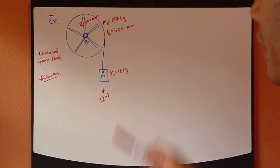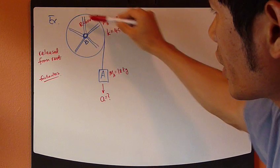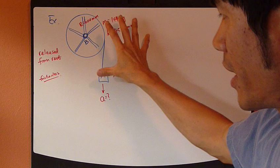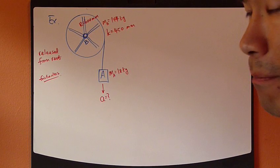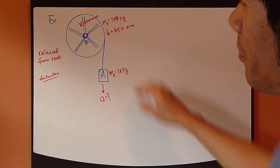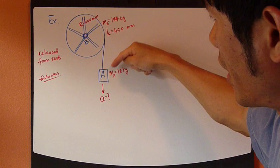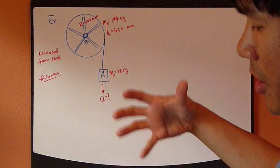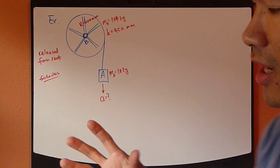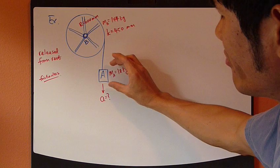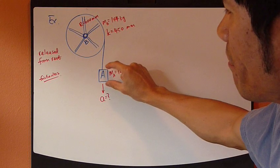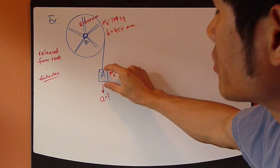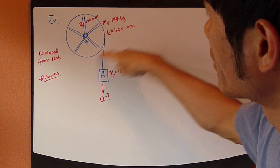Let's look at an example. This includes a wheel and some weight — this is like a hoist, okay. A hoist you can find in, let's say, a mine shaft, where you have a big giant wheel with a really thick rope attached to some kind of elevator or container where you can transport people or minerals.